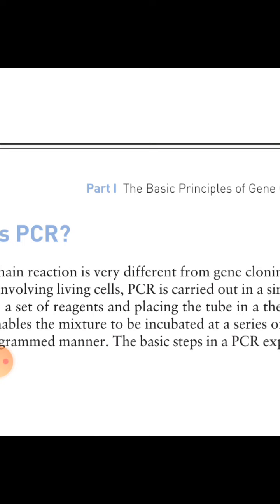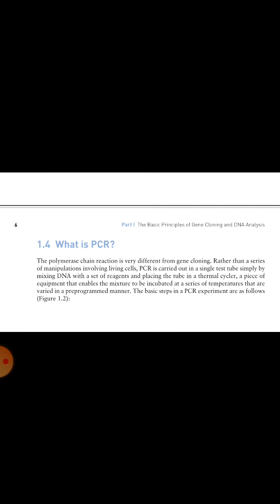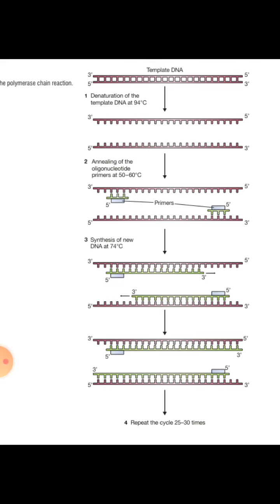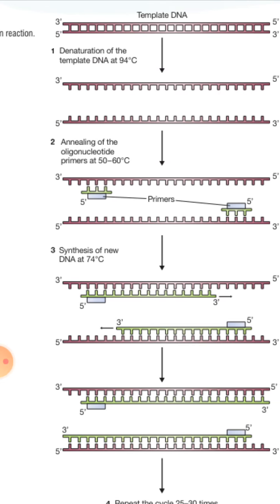So how can PCR be performed? The basic steps in a PCR experiment are as follows: hot start, denaturation, annealing, extension, and temperature.